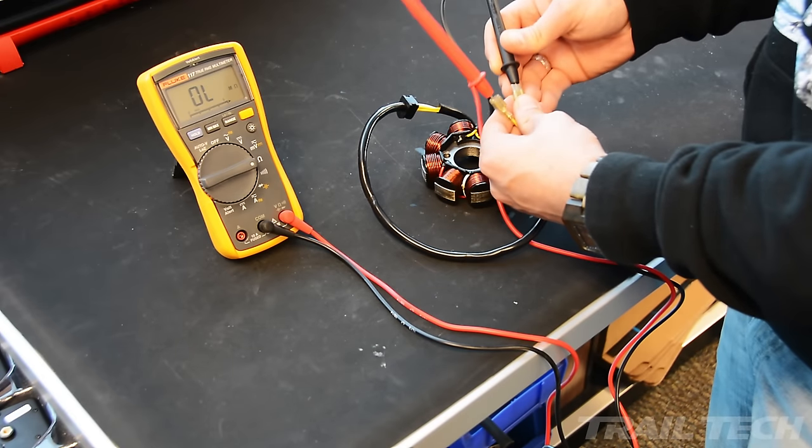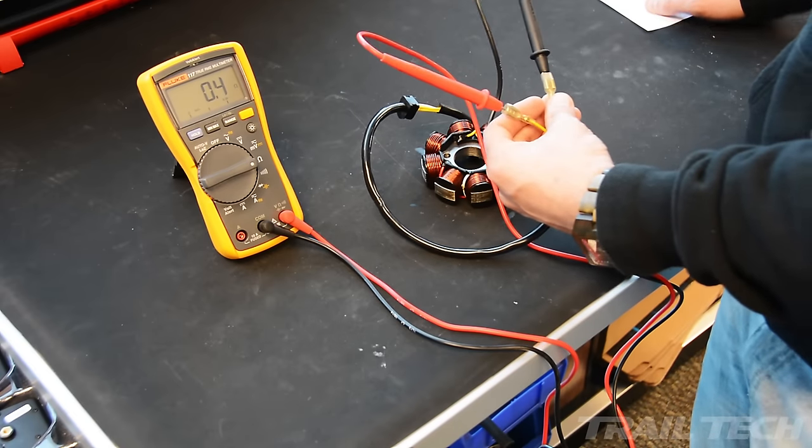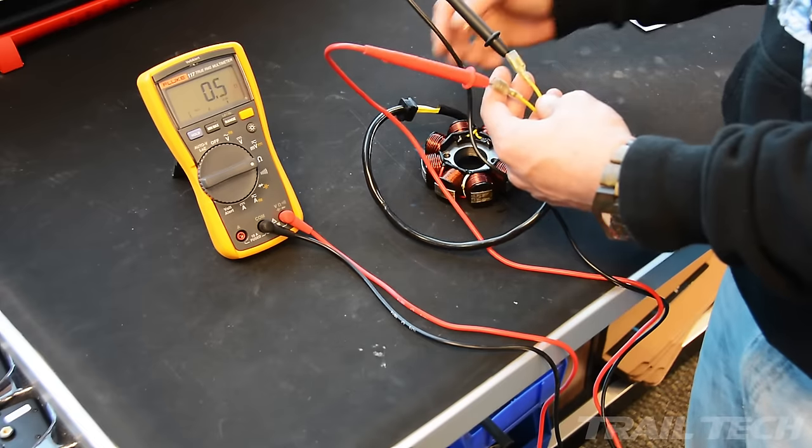If this stator is in good condition, it should be reading between 0.3 and 0.5 ohms. And as you can see, we're right in that range. 0.3, 0.4, it's perfect.